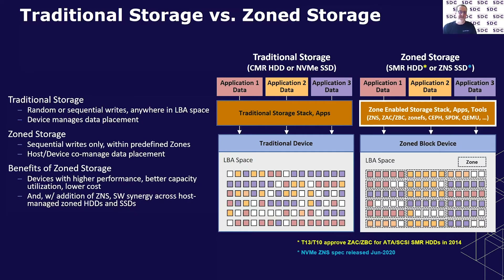On lower cost, again using SSDs as an example, we can have less DRAM in the device. The reason is that a traditional SSD maps every LBA — every logical block — to every physical block on the device, and there are a lot of logical blocks, especially in very high capacity SSDs. With zone storage, we're just mapping the first LBA of each zone in this table, and there are far fewer zones. Zones are typically quite big, so the logical-to-physical mapping tables get smaller and we save money on DRAM. As we're starting to talk about four-level cell NAND and one- to four-terabyte SSDs, this DRAM cost is becoming a significant factor for data center customers.